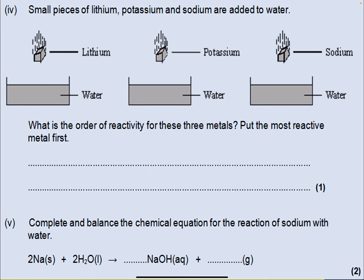Here's another one: small pieces of lithium, potassium, and sodium are added to water. What is the order of reactivity for these three metals? Put the most reactive metal first — worth one mark. What you should have: potassium, followed by sodium, followed by lithium. Then complete and balance the chemical equation for the reaction of sodium with water. Sodium reacts with water to make sodium hydroxide, which is an alkali, plus hydrogen gas. That is the balanced equation.